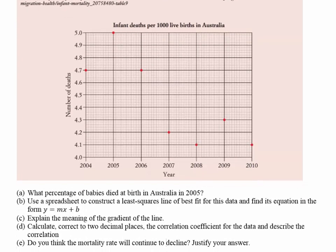The first question asks: what percentage of babies died at birth in Australia in 2005? We can read it off the graph and we can see that five percent of the children died. Now Part B says to use a spreadsheet to construct a least squares line of best fit.